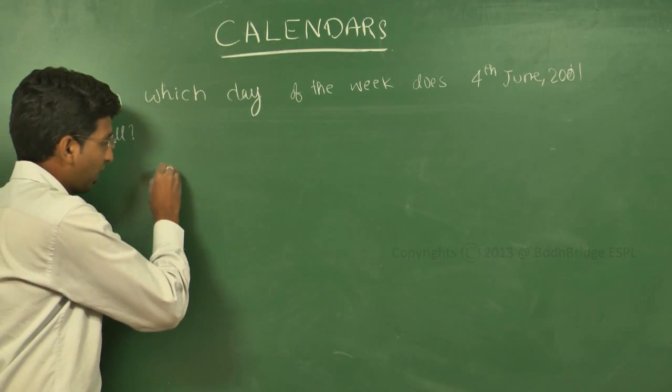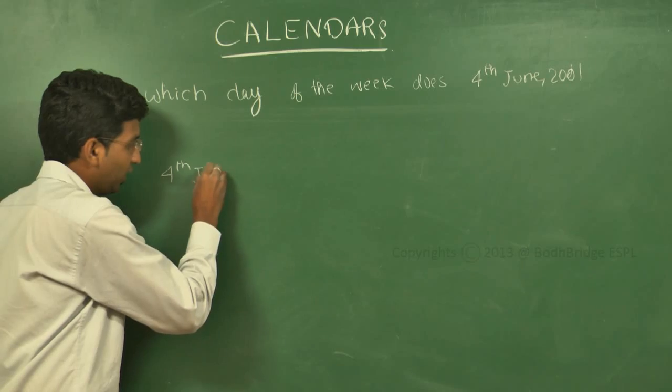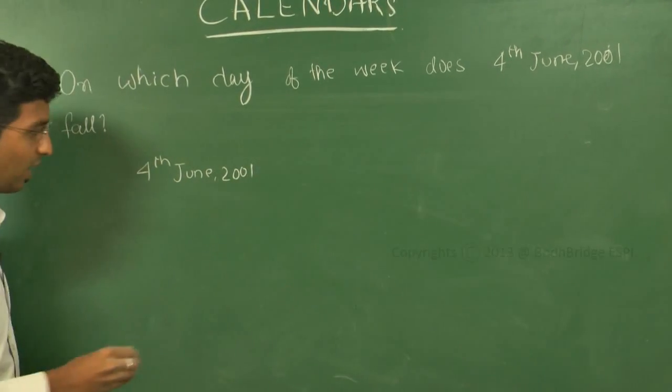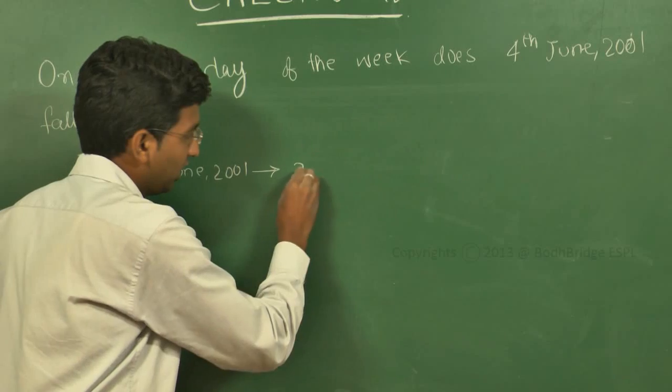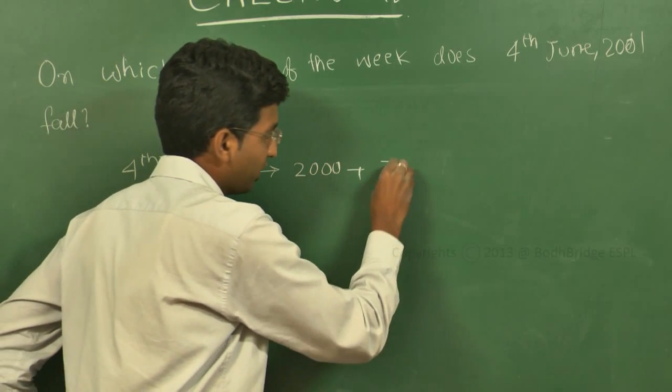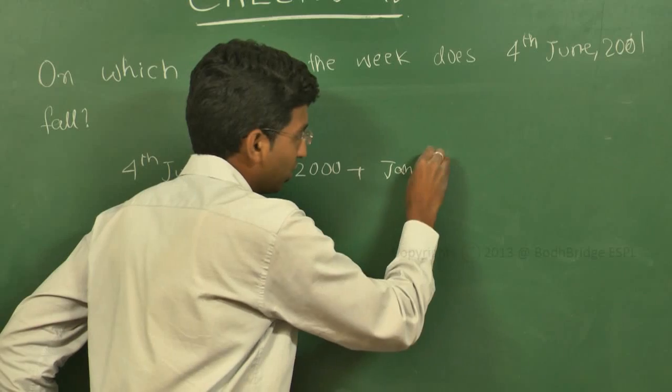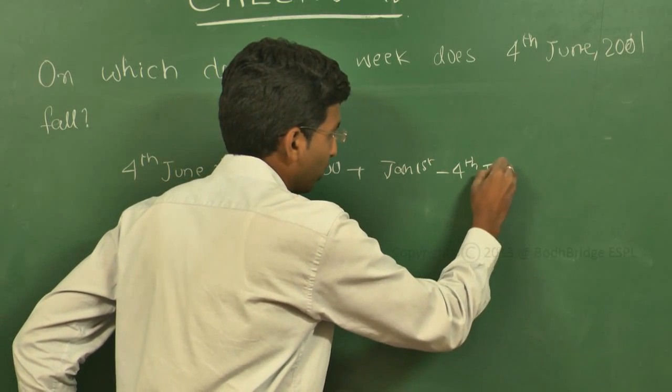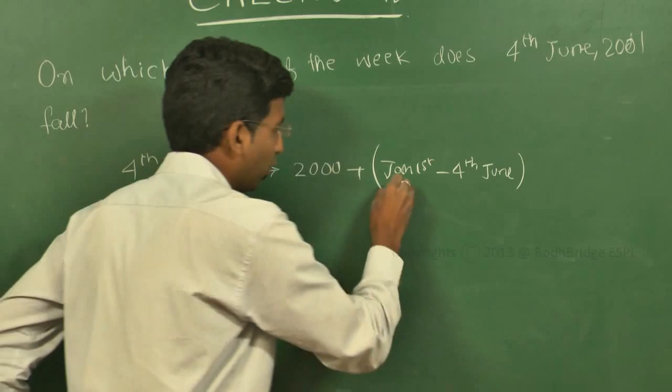We have to find the day of 4th June 2001. 2001 implies that 2000 years are over, plus from January 1st to 4th of June. We need to find the odd days. Once we find these odd days, we will be able to find which day this 4th June 2001 will come.